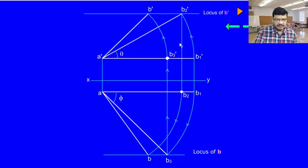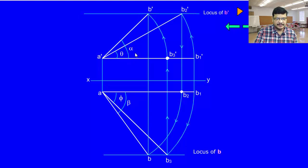Now, to verify whether this is done correctly: B' and B must lie on the same projector. Yes, these two are lying on the same projector — so this procedure is correct. The angle made by A'B', the final front view, is called the apparent angle, denoted alpha. The angle made by the final top view AB is called the other apparent angle with respect to VP, denoted beta. Theta and phi are the actual inclinations. Alpha and beta are the apparent angles corresponding to the final front view and final top view. This is the standard procedure.